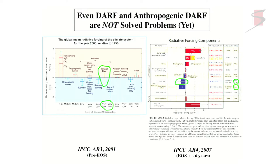Back in AR3 in 2001, aerosol effects were listed as very low in terms of confidence. By AR4, after EOS plus six years, it was just medium low. Part of the reason for that — maybe a large part — was that with satellite instruments like MISR and MODIS, and the Aeronet system, we were in a position to constrain aerosol optical depth on a monthly global basis better than had ever been done before, and the modelers were able to use that as a constraint.